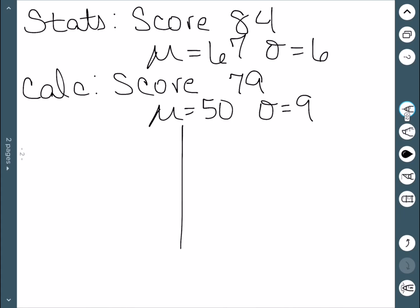Let's consider how they did in relation to the rest of the class. For the statistics exam, we would do their score minus the mean divided by the standard deviation. If we work this out, we get approximately 2.83.